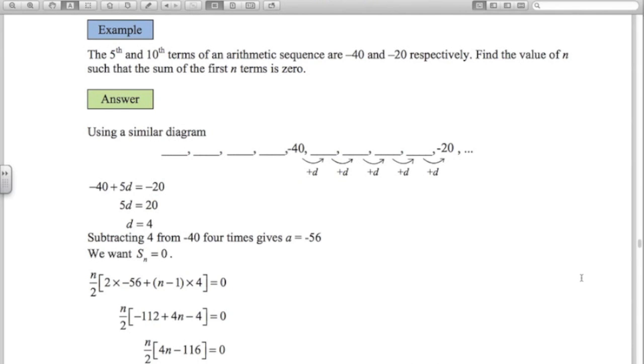The last example here is the trickiest one. We've got the 5th and 10th terms. You can see I've drawn them out. 5th and 10th terms of an arithmetic sequence. We want to know the value of N such that the sum of the first N terms is 0. Well, first thing I'm going to do is work out D, which I'll do the same way as I did above. Negative 40 plus 5 lots of D gives me negative 20. So that means D is 4. I'm adding on 4 each time.